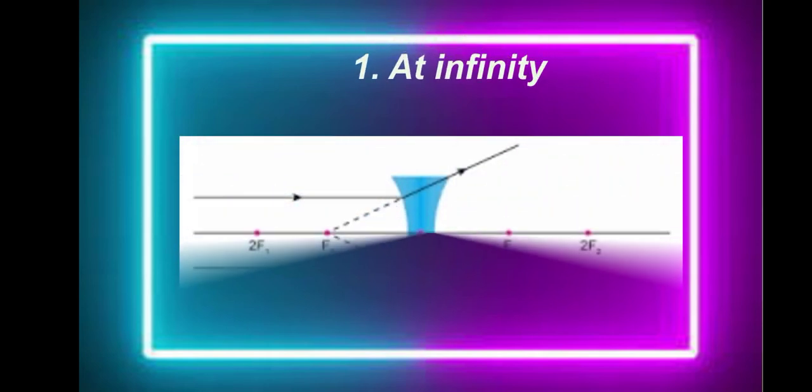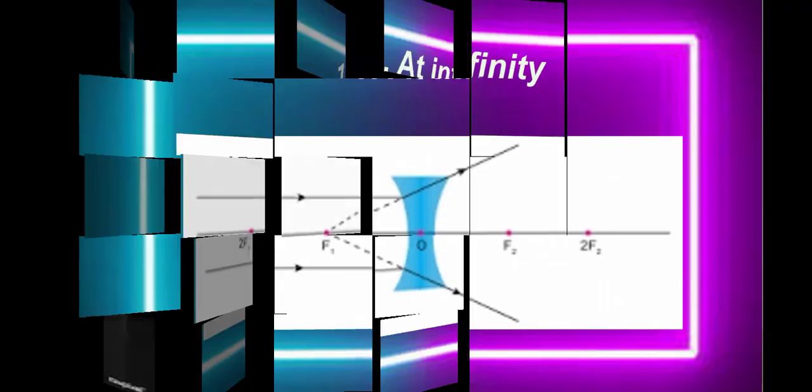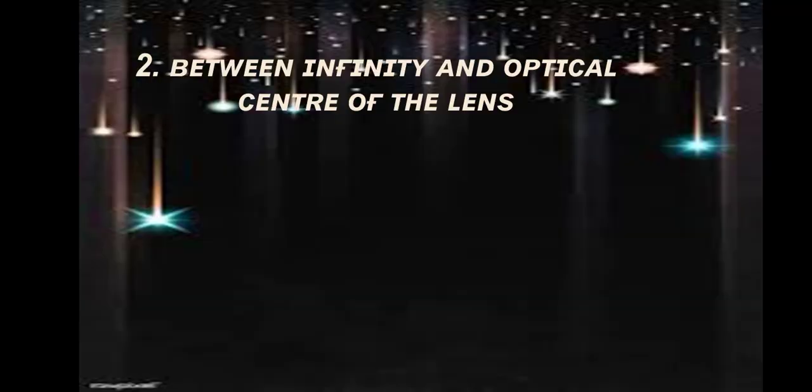Now let us see the ray diagrams: when the object is at infinity, and when the object is between infinity and the optical center of the lens.